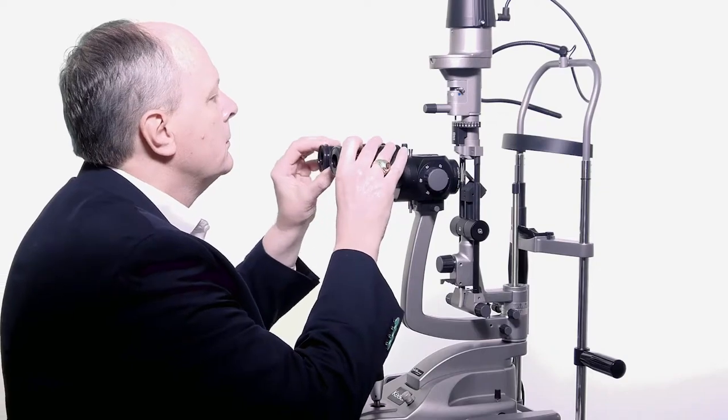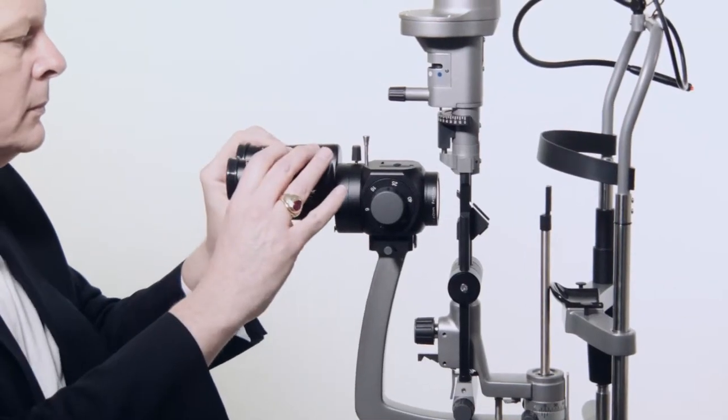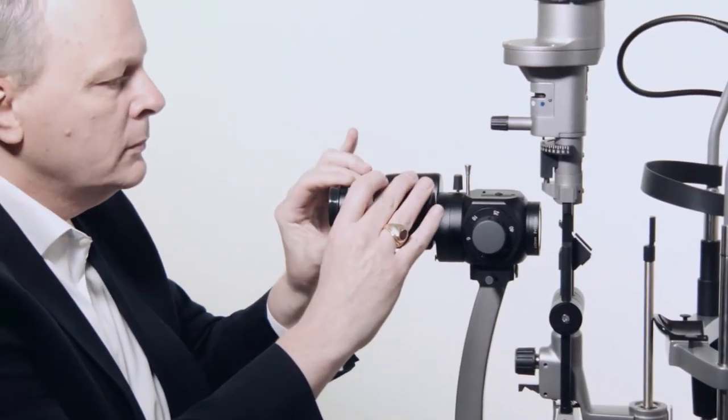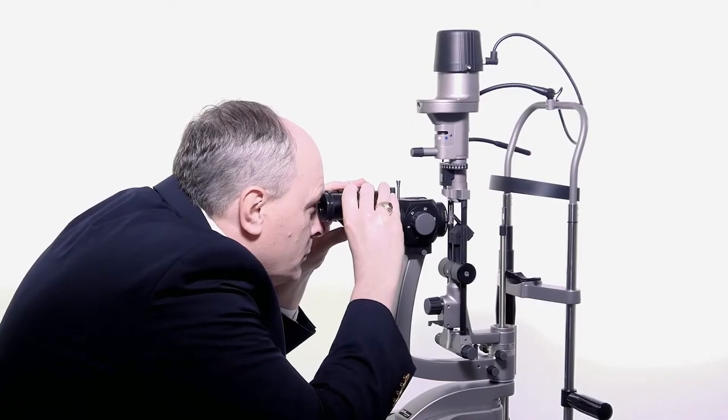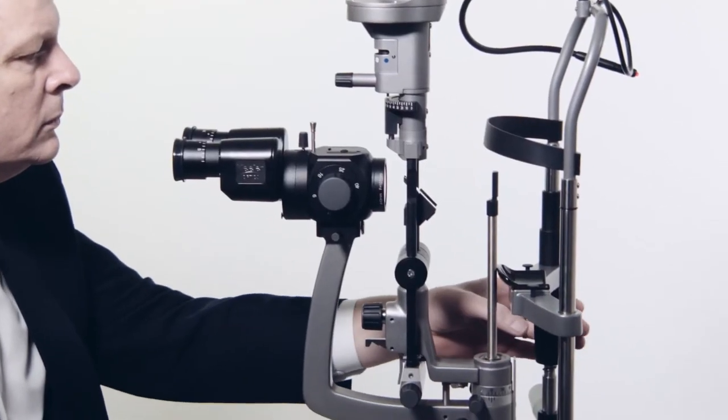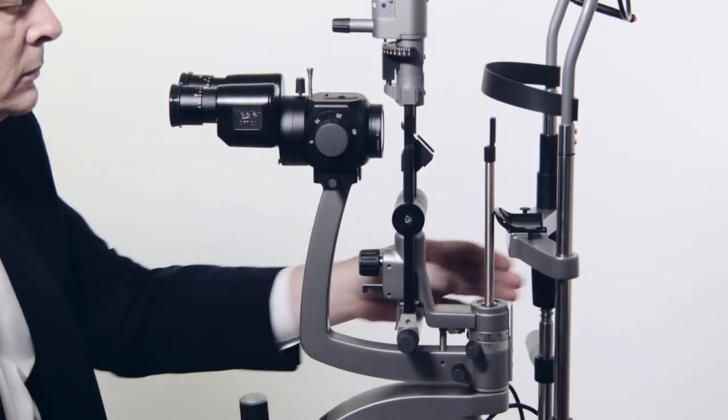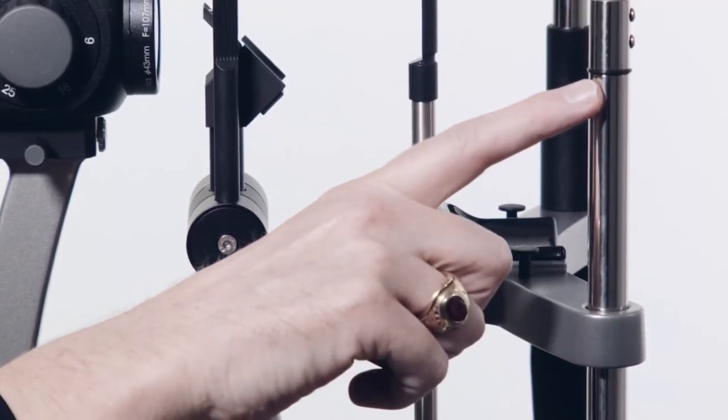Before using the slit lamp for examination, adjust the eyepiece's pupillary distance or PD. The PD ranges from 49mm to 77mm. Adjust the chin rest height so that the patient's eyes are level with the height mark on the chin rest support.